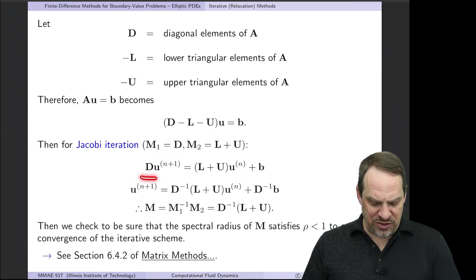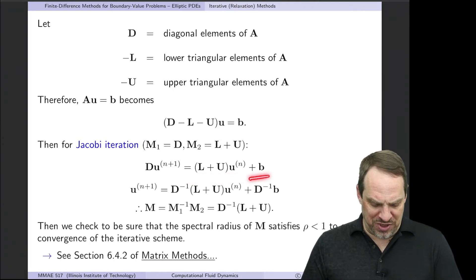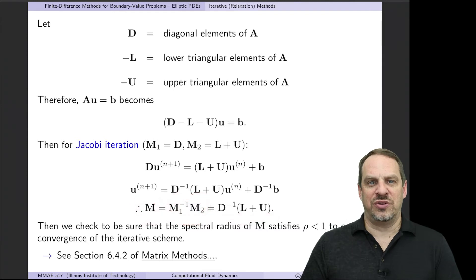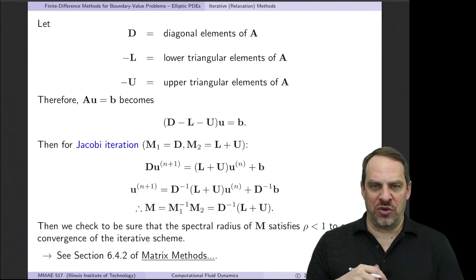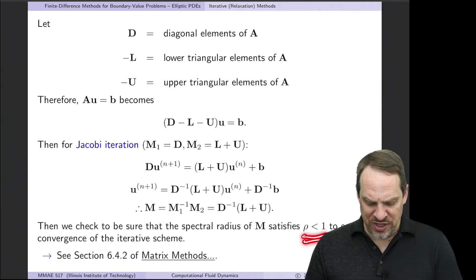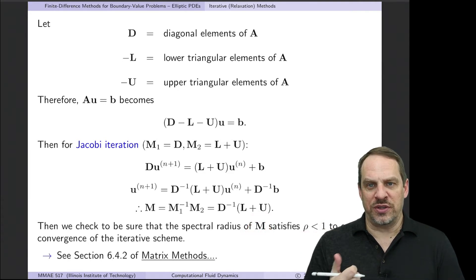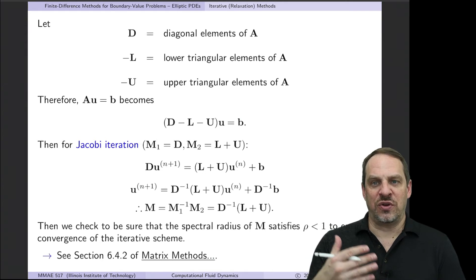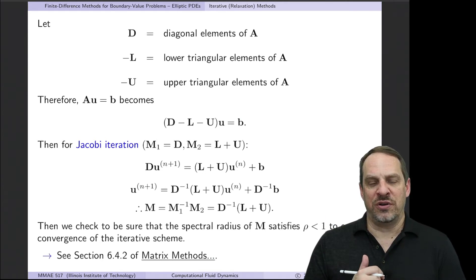For Jacobi, with M1 = D, we have D·u^{n+1} = (L + U)·u^n + b. Multiplying by D^{-1} on both sides gives us M = D^{-1}(L + U) as our iteration matrix. As shown in another video, an iterative method converges when the spectral radius of the iteration matrix — the largest eigenvalue by magnitude — is less than 1. In other words, all eigenvalues of the iteration matrix must have magnitude less than 1 for the iterative method to converge.